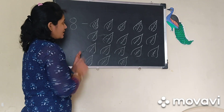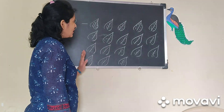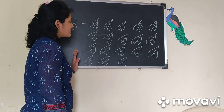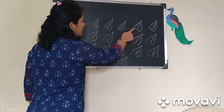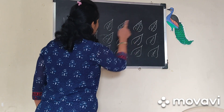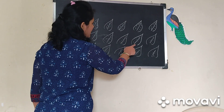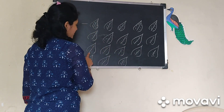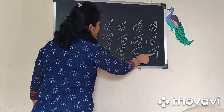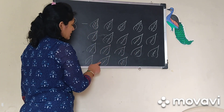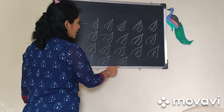Now see here. Here are leaves. How many leaves are here? Count it: 1, 2, 3, 4, 5, 6, 7, 8, 9, 10, 11, 12, 13, 14, 15, 16, 17, 18. 18 leaves are here.